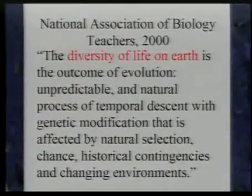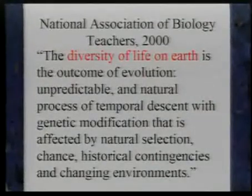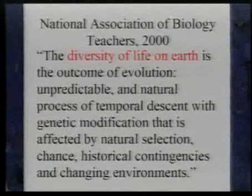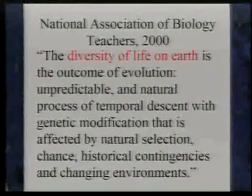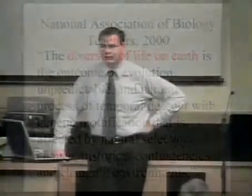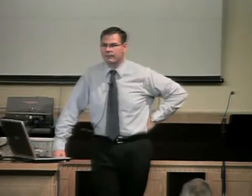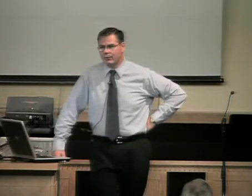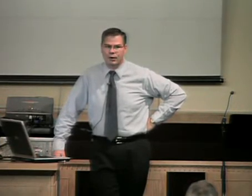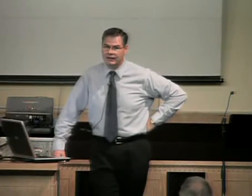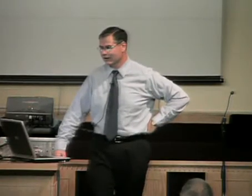Evolutionists say it's an unpredictable and natural process of temporal descent with genetic modification, affected by natural selection, chance, historical contingencies, and changing environments. You see a lot of chance and historical contingencies in their definition, and no words alluding to design, plan, purpose, or designer. That is a major difference between evolution and our view. We don't put stock in chance and historical contingencies — we put emphasis on design, purpose, planning, forethought, and reason. I'm suggesting that is a better description of what we see in biological systems.